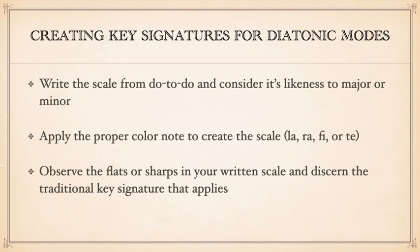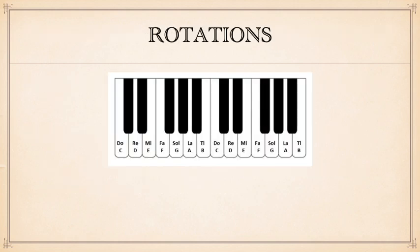So how can we create a key signature for these modes? Well, we know that they are a rotation of an already existing major key, so we can find a relative relationship. And we know that they sound parallel to some major or minor key, but with one alteration. First, write the pitches from Do to Do on the staff and recall which scale the mode sounds like — searching for that parallel relationship. Then add the appropriate color note: either La, Ra, Fi, or Te. Now observe the number of flats or sharps written — this will always correspond to a traditional key signature. To double-check your work, you can think of the relative relationship, or the rotation under which the mode falls.